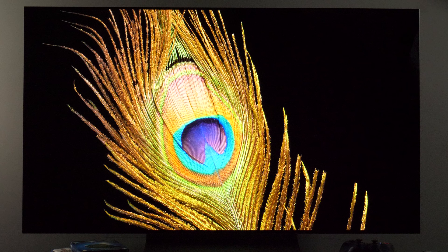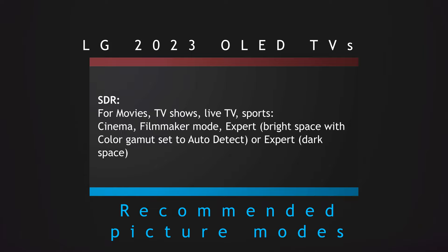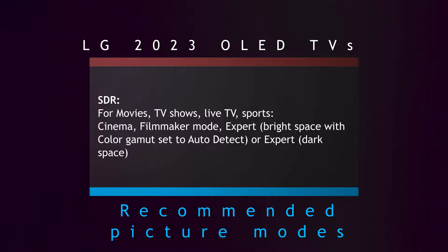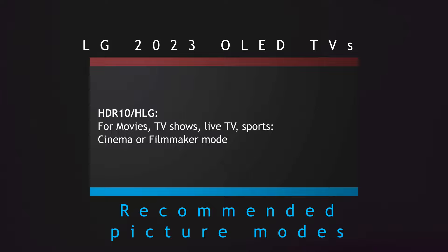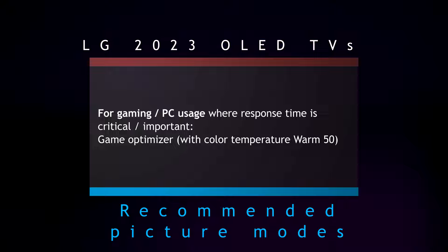Now that your TV is in home mode, we need to select the most accurate picture preset. For SDR content, my recommendation is Cinema, Filmmaker Mode, Expert Bright with color gamut set to auto detect, or Expert Dark. For HDR10 or HLG content, use either Cinema or Filmmaker Mode. For Dolby Vision, use Dolby Vision Cinema. For gaming, use Game Optimizer, which is adjusted in a similar way as those accurate picture modes for standard content viewing.